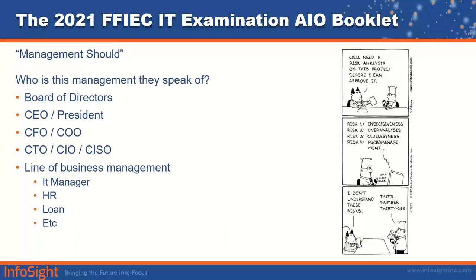So who is this 'management' that should? You've got the board of directors, CEO, President, CFO, COO, Chief Technology Officer, Chief Information Officer, Chief Information Security Officer, line of business management, IT managers, HR officers, loan officers, and more. It should be a top-down approach in the GRC area — it has to come from top-level management down for any chance to establish consistency and buy-in from all levels of the institution.